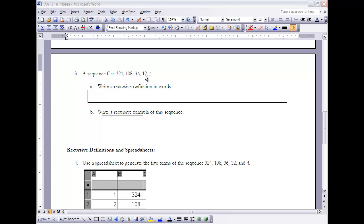To go from 12 to 4, I divided by 3. I divided 36 by 3 to get 12. I divided 108 by 3 to get 36. And I divided 324 by 3 to get 108. So when I write a recursive definition for that in words...